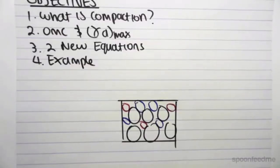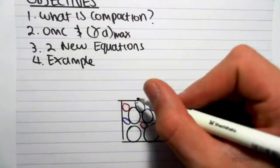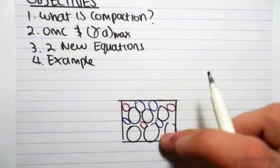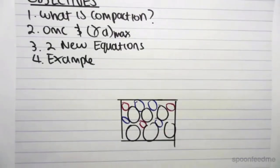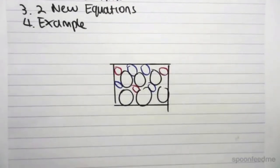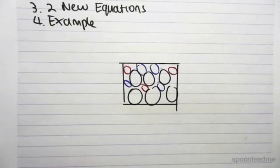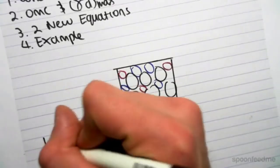You often see steamrollers on building sites coming to compact the soil before they put any buildings on it, or any structure. So what is compaction dependent on? Compaction is dependent on three things.